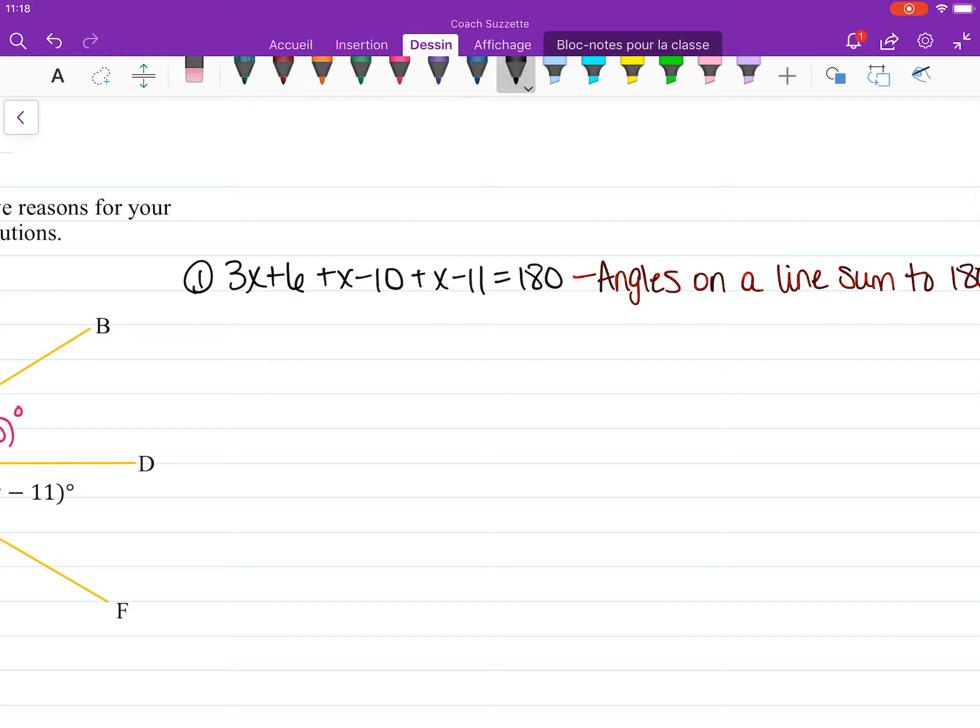OK. Let's keep going. Combining like terms, 3 plus 1 plus 1 is 5x. And then we have 6 minus 10 minus 11, so minus 21 plus 6 is minus 15. Then we have 5x minus 15 equals 180. OK.